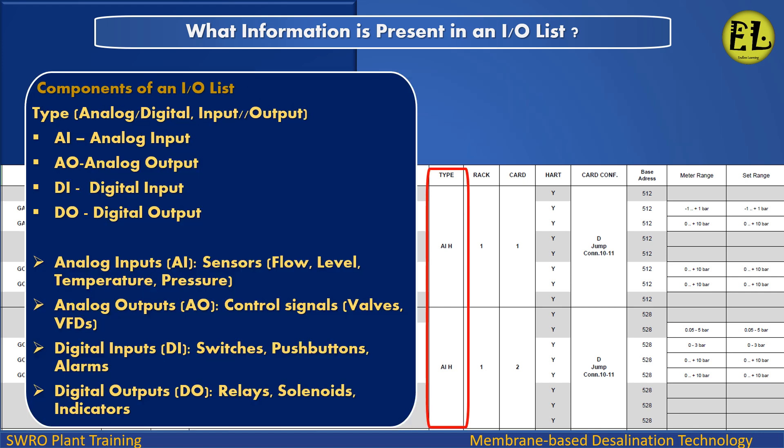Type: Analog or Digital, Input or Output. AI = Analog Input, AO = Analog Output, DI = Digital Input, DO = Digital Output.